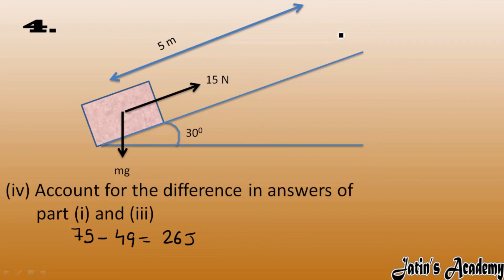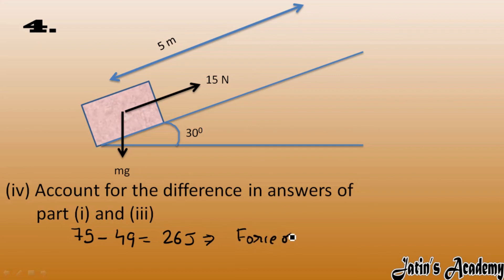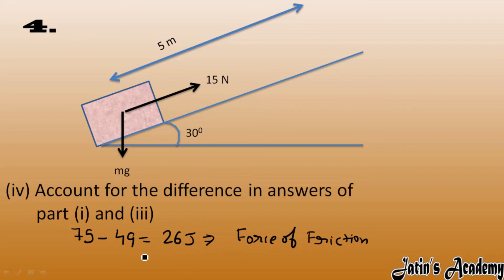Why is there a difference of 26 Joules? The total work done is 75 Joules — this accounts for raising the block's height as well as moving it along a rough inclined plane. The 26 Joules is the work done against friction. When the block moves on the rough inclined plane, friction acts against the motion, and some additional force and work is required to overcome this friction.